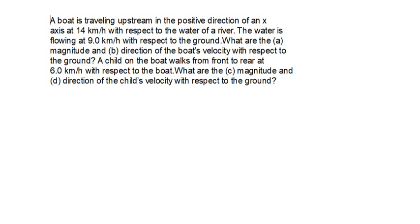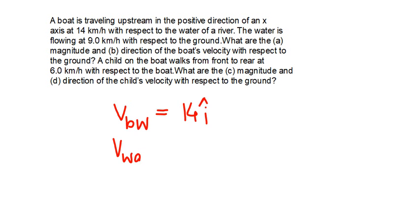The first thing that is given is the boat is travelling upstream in the positive x-direction, so water must be moving in the negative x-direction. The velocity of the boat with respect to water, that is VBW, is 14 î because it is in the positive x-direction. Whereas the velocity of water with respect to ground is 9 km per hour, but it will be in the negative x-direction, so it is minus 9 î.